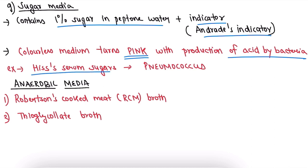His serum sugar is used for isolation of pneumococcus. The last topic is anaerobic media, which is used for culture of anaerobic bacteria. Anaerobic media consists of Robertson's cooked meat broth (RCM broth) and thioglycolate broth. Thank you for watching — hope you liked this video. Make sure to hit the like and subscribe button for more videos related to the medical field.